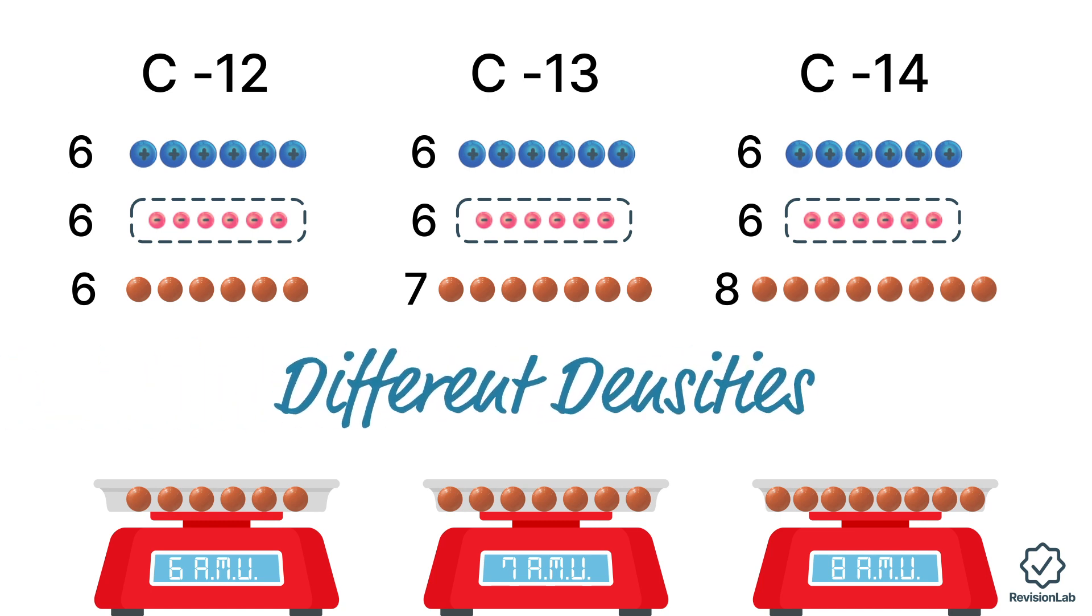We can use the mass spectrometer to find out the relative abundances of different isotopes of an element and this is based on this principle that the isotopes have different densities.